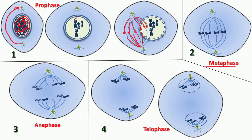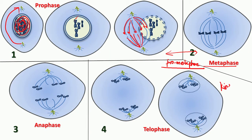At the next step, the chromosomes start arranging in the spindle. This happens between prophase and metaphase in an intermediary step also called prometaphase. In prometaphase, the chromosomes start attaching themselves to the spindle fibres through the structure called the kinetochore.